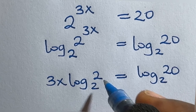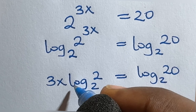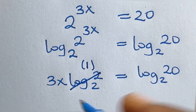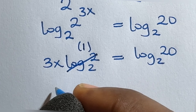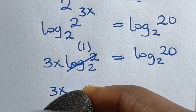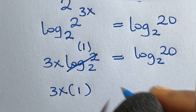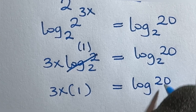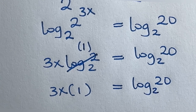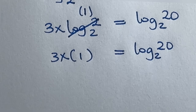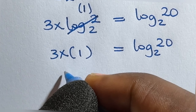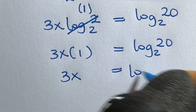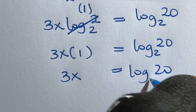Because this is log base 2 of 2, this entire term becomes 1. So I have 3x times 1, which is equal to log₂20. Of course 3x times 1 is still 3x, so this gives us 3x equals log₂20.